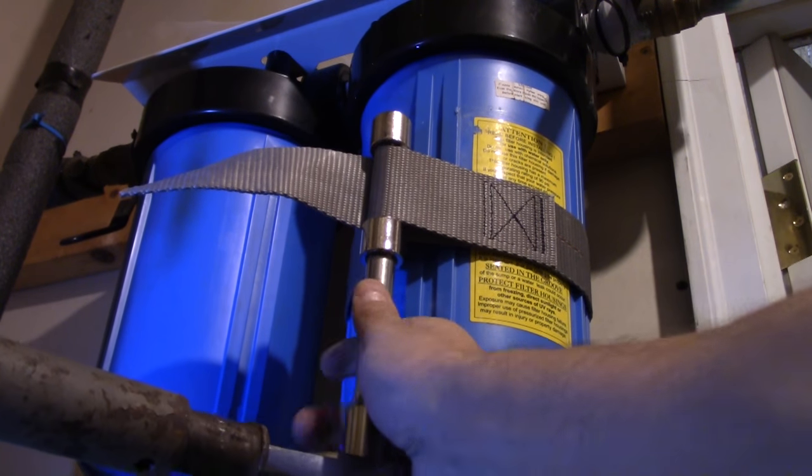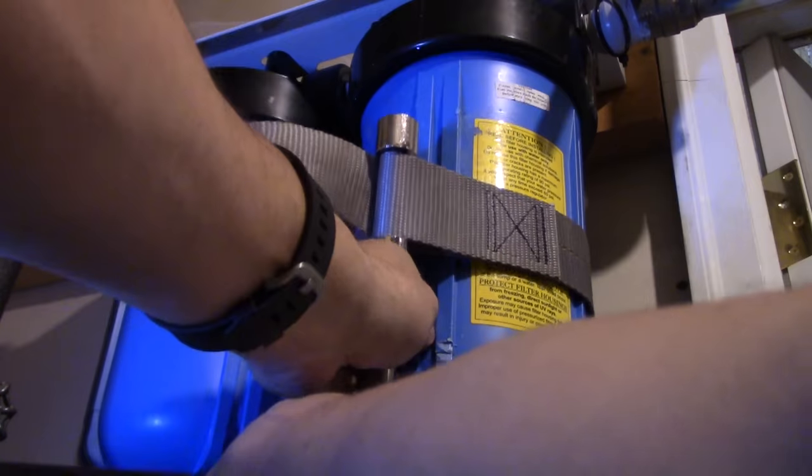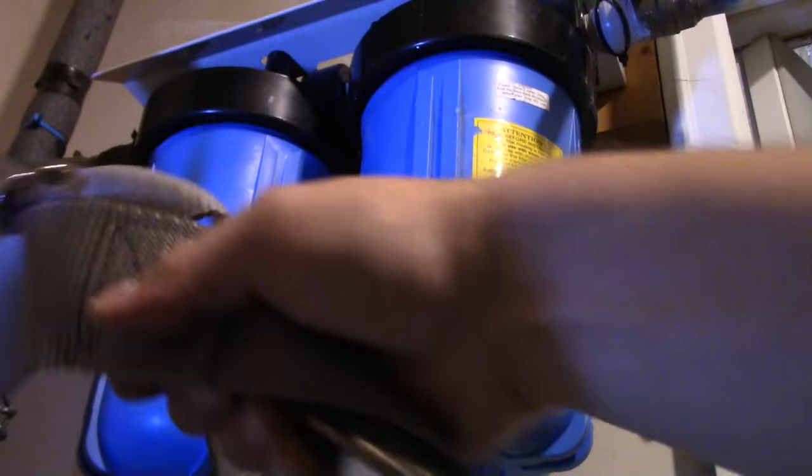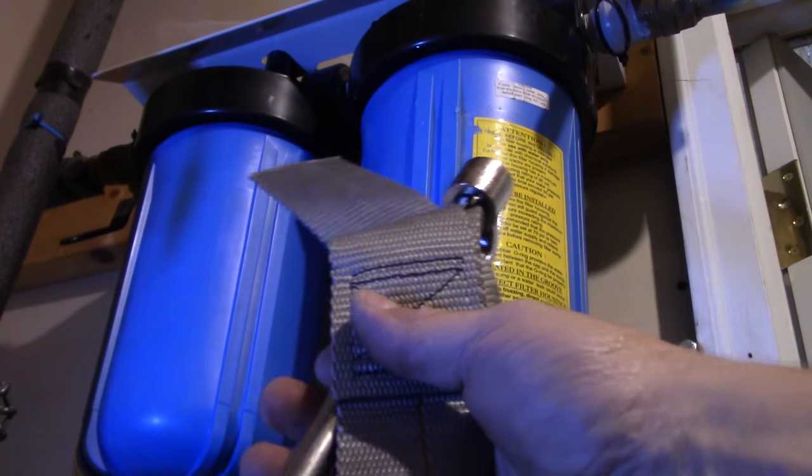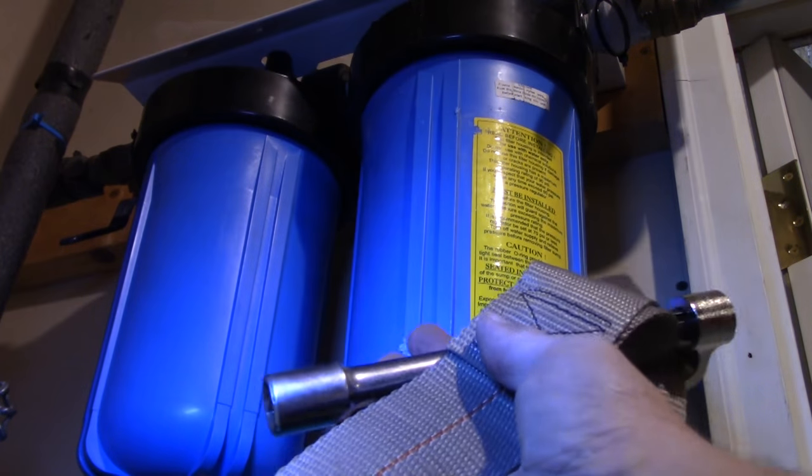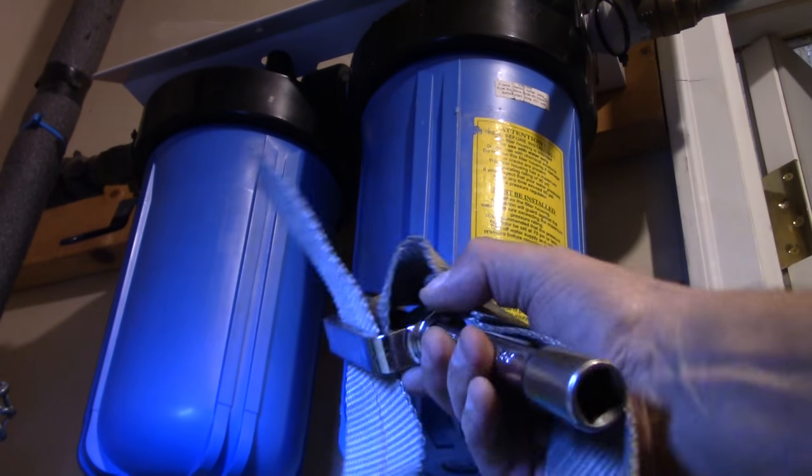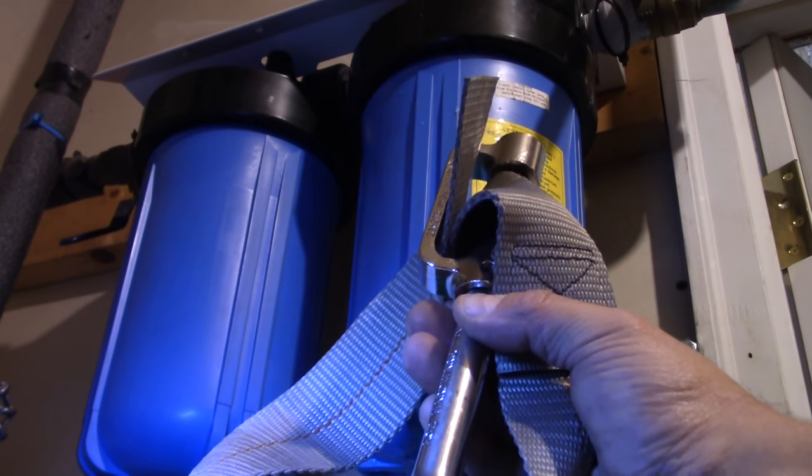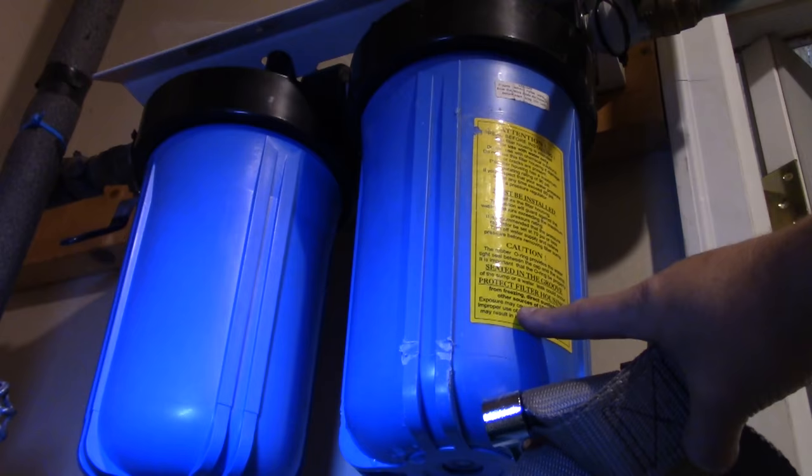So if you're watching this video and you're struggling with your filter housing, you might want to invest in one of these Lyle strap wrenches. It's got a bunch of other uses as well. Obviously, anything you're trying to remove that you can't get a traditional wrench around, it works really well, but especially for this particular use.